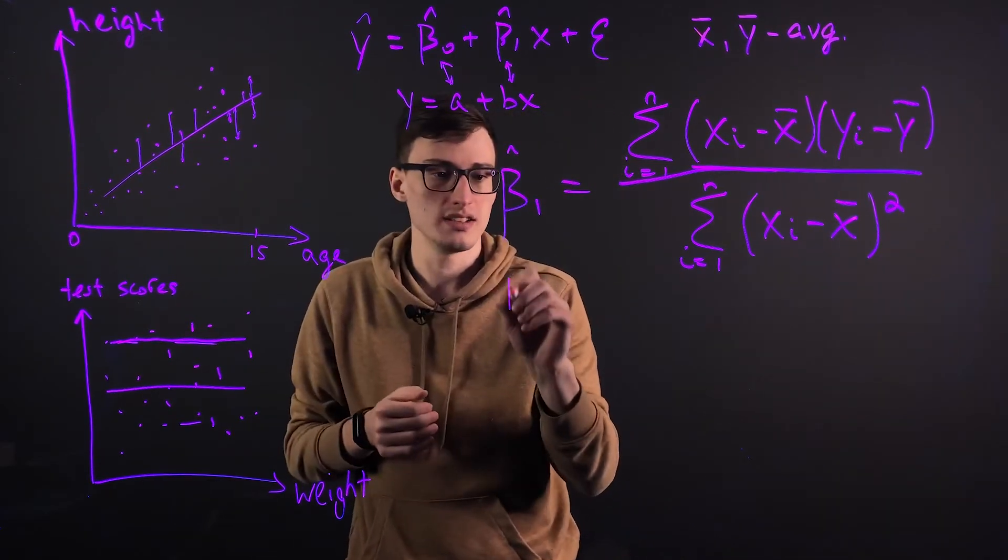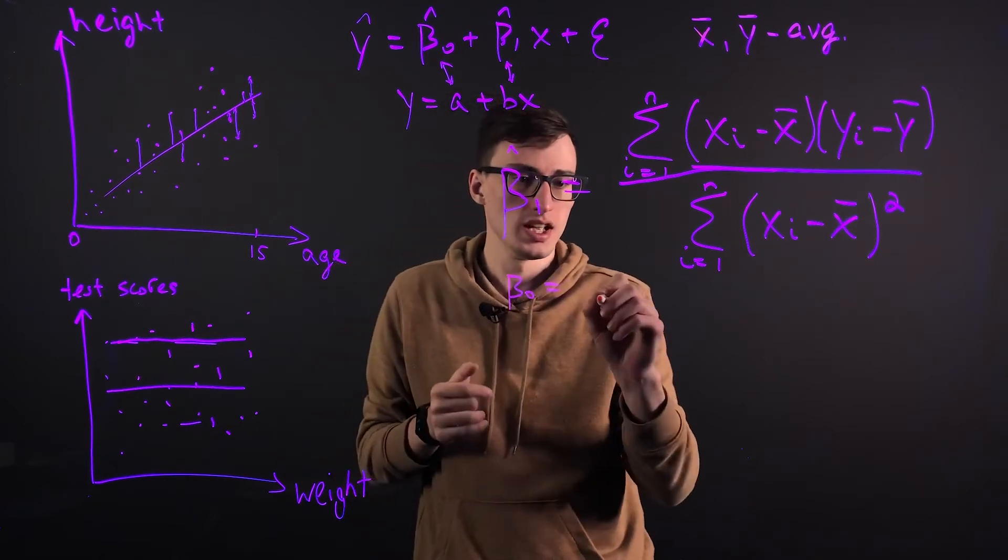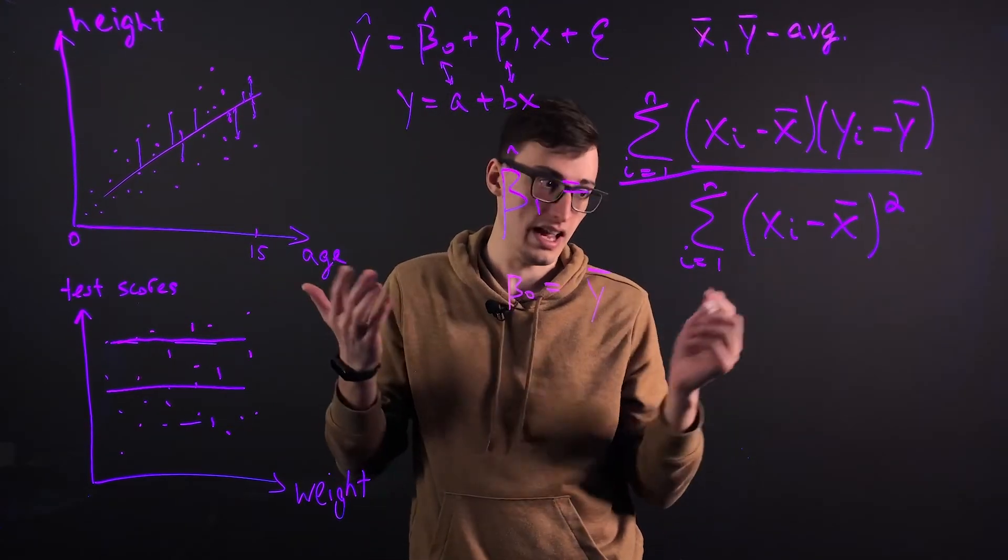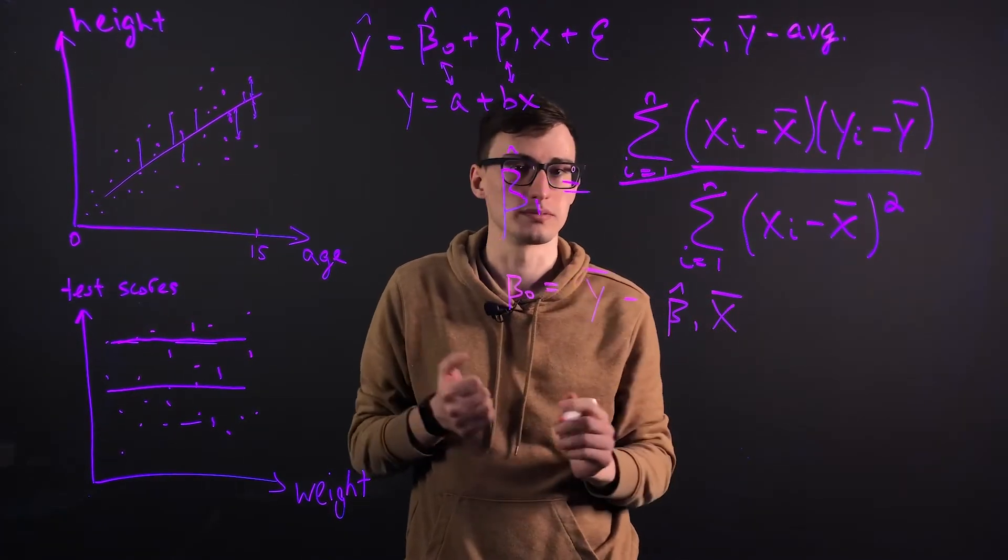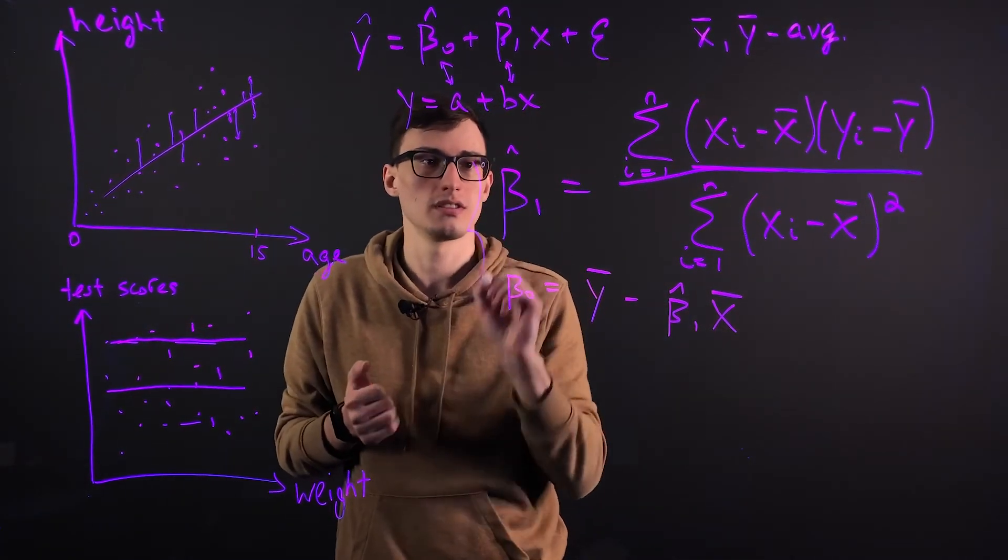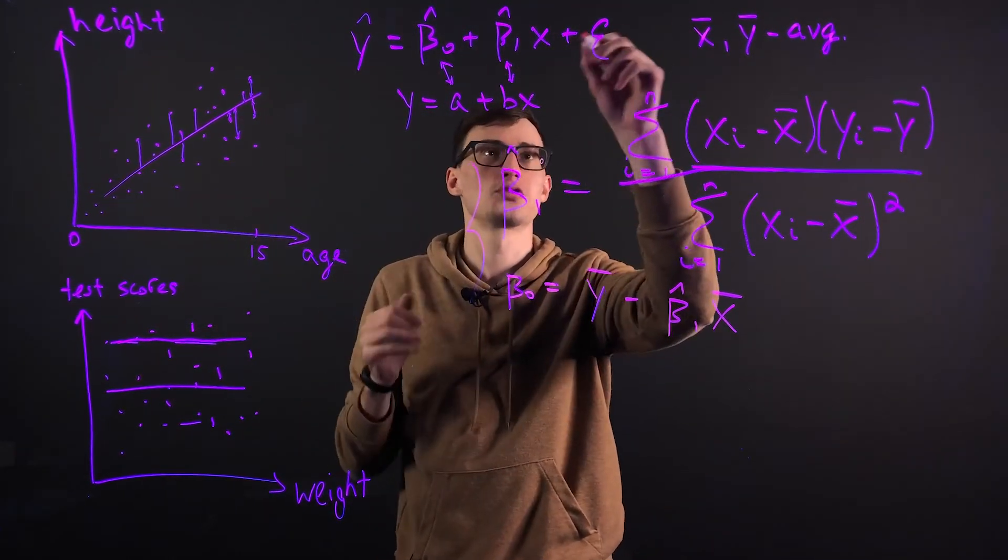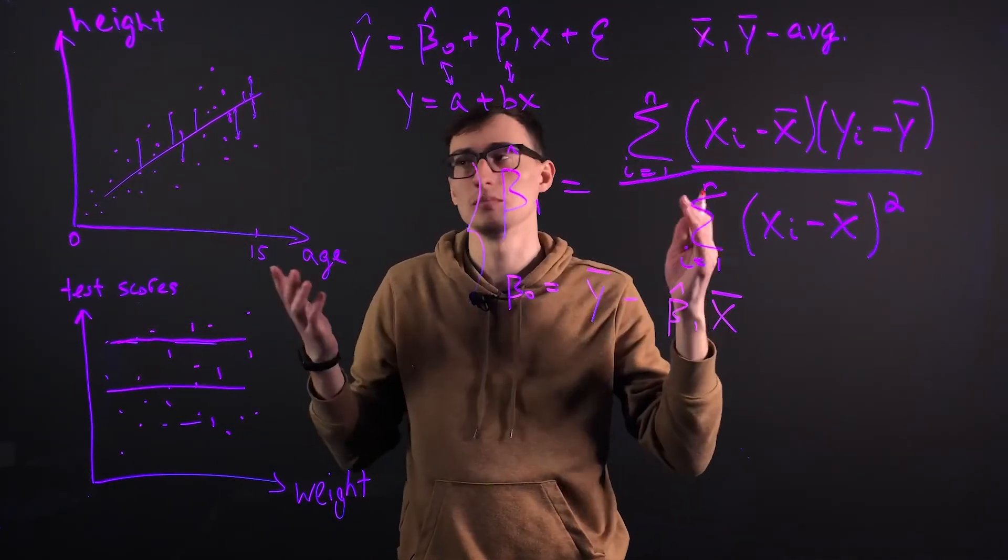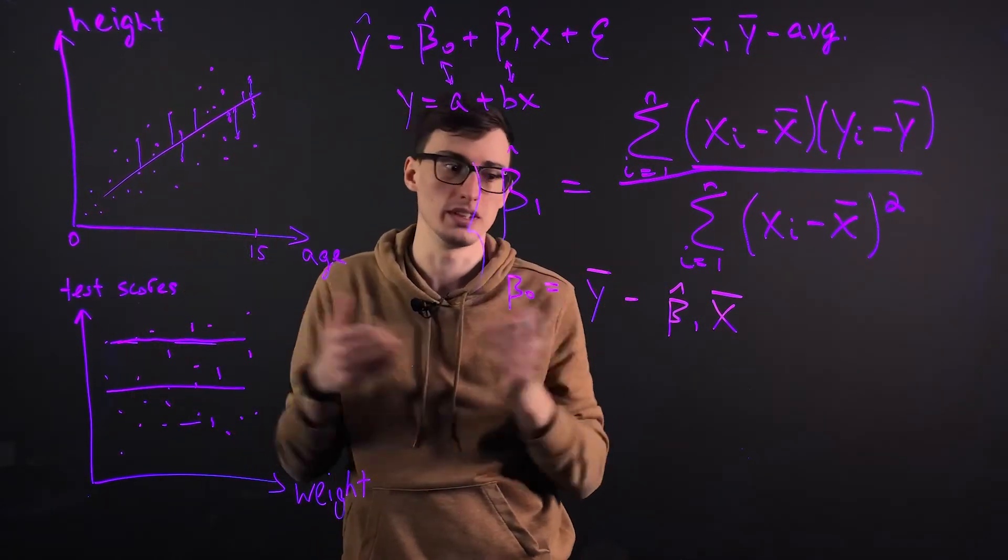And beta 0 is then defined by using beta 1. It's y bar, the average, minus the beta 1 estimator times x bar. So these are the two variables that we use. And then you just write plus epsilon, plus the error term because obviously there will always be a little bit of an error.